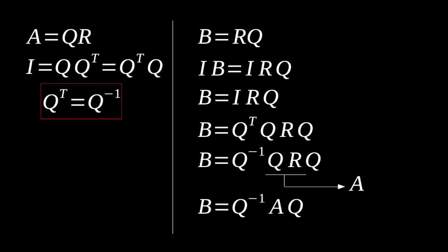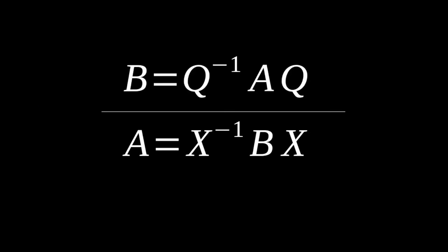If we look at this very closely, that B is equal to Q inverse by A by Q, this is actually telling us that our Q matrix satisfies our requirement of an invertible X matrix such that this is proving to us that A and B are similar matrices. If we put them side by side and look at one another from what we had before, it's very clear that our Q matrix in this case is that invertible X matrix such that B and A or A and B are similar matrices.